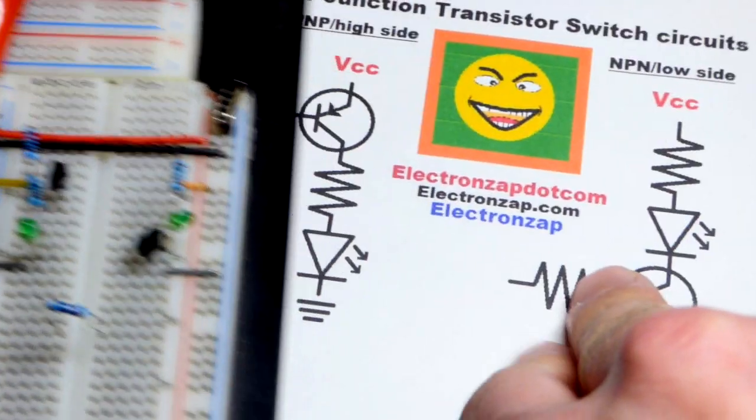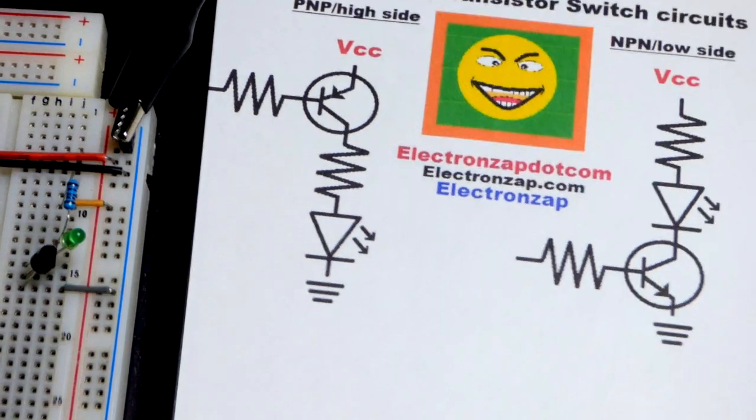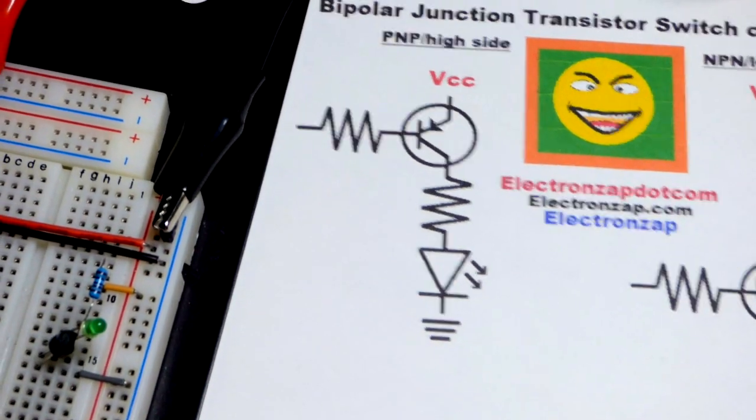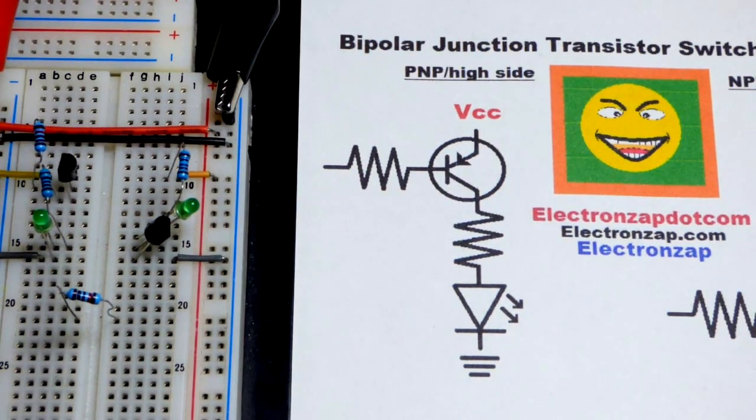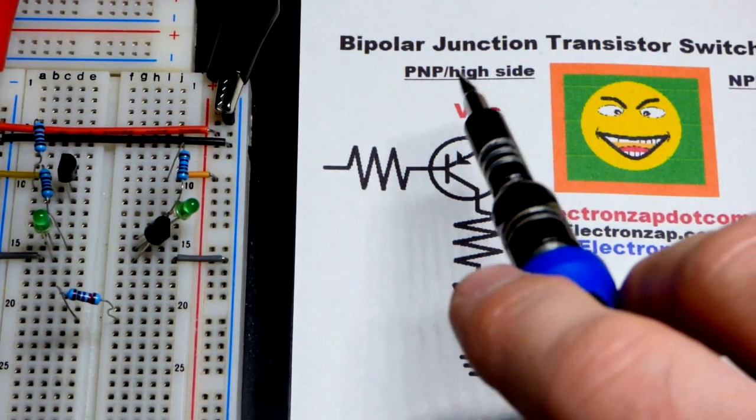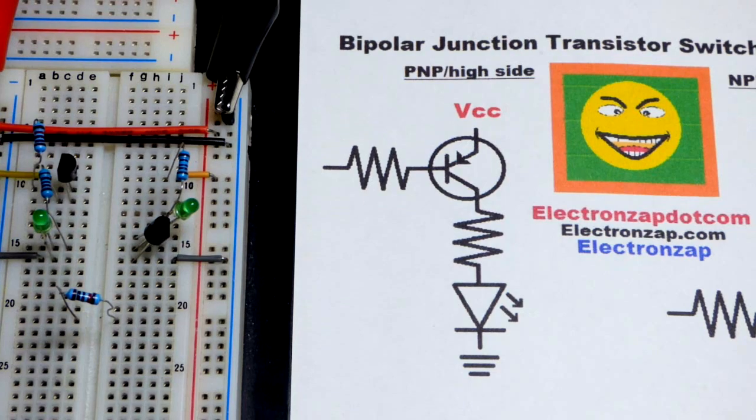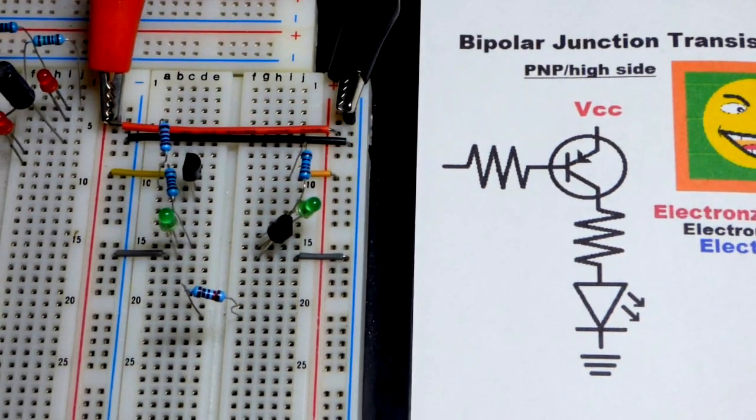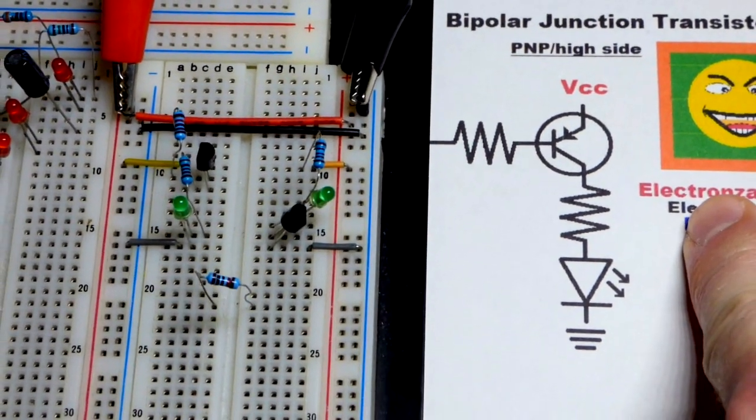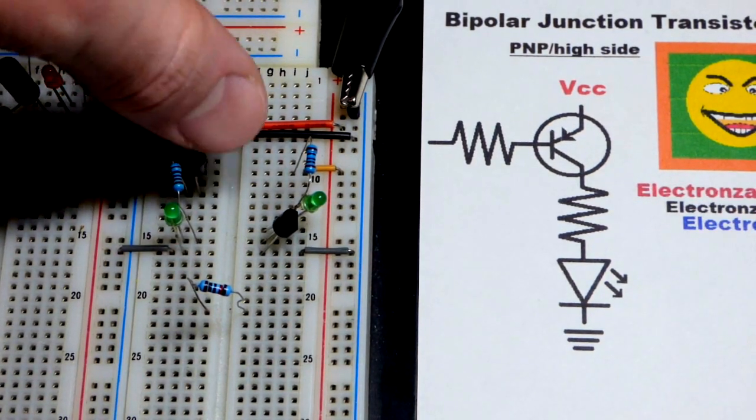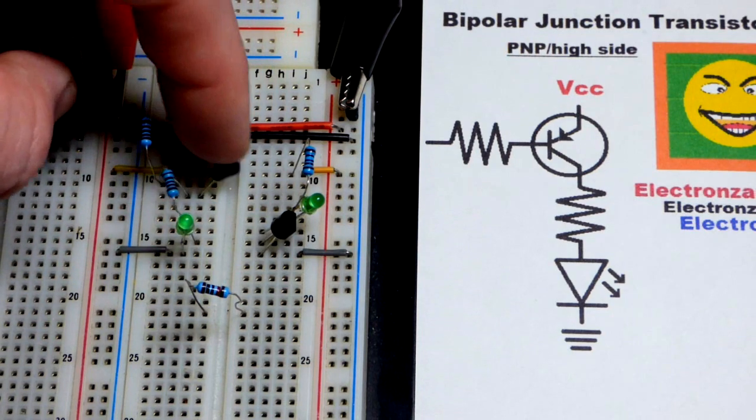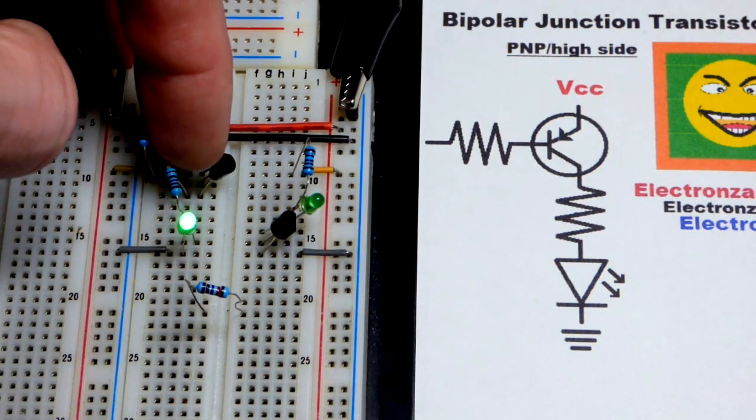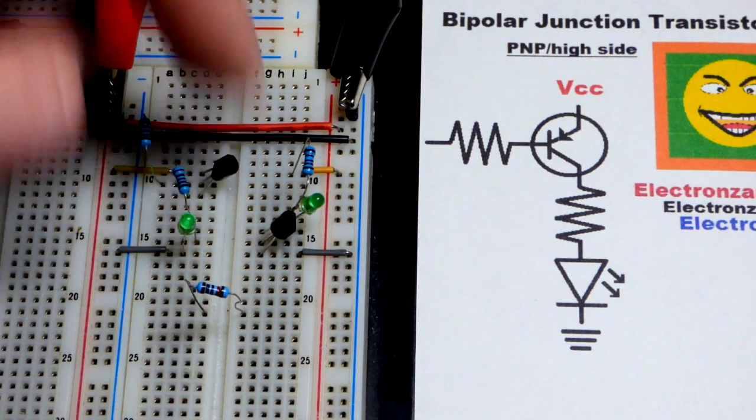So now we come to the PNP bipolar junction transistor. The NPN had to be on the low side. The PNP has to be on the high side. So if you need a high side switch for whatever reason or just want one, you'll want to work with the PNP bipolar junction transistor. The pin layout is the same, just chemistries are opposite. So now I have the emitter to the top, the base in the middle. This is a 2N3906.